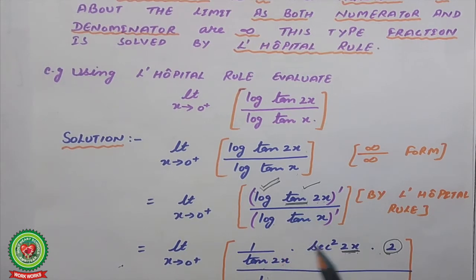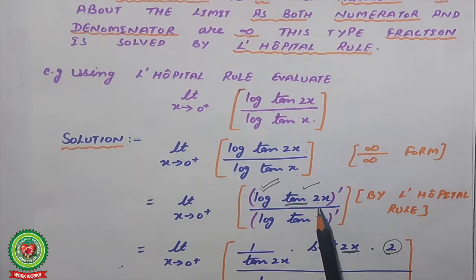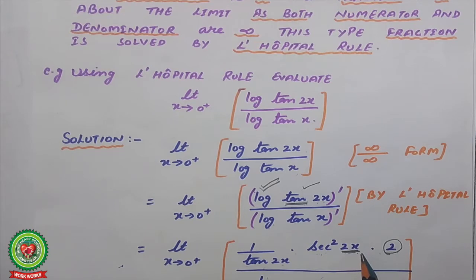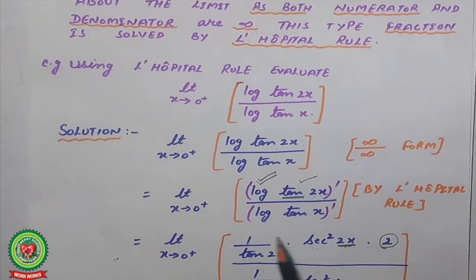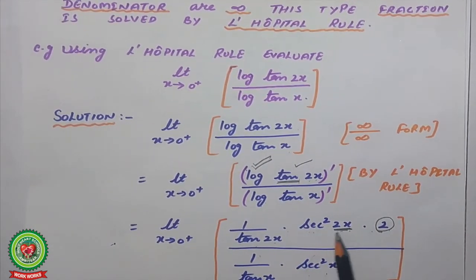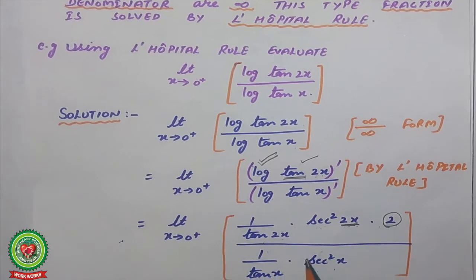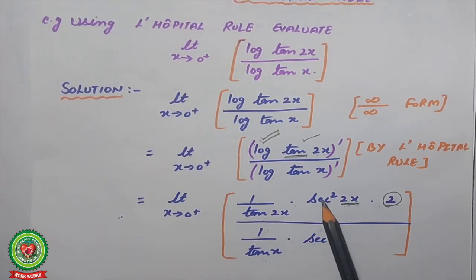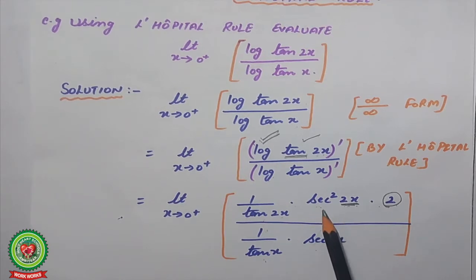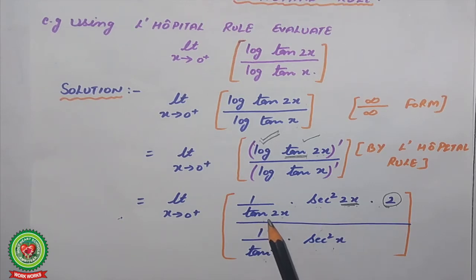Next is the differentiation of tan, which gives secant squared of the angle — so secant squared(2x). Then the differentiation of the angle 2x gives 2. So the full numerator derivative becomes (1/tan2x) · sec²(2x) · 2. For the denominator, log(tanx) differentiates to (1/tanx) · sec²(x). We then convert secant squared to 1/cos² and tan to sin/cos.